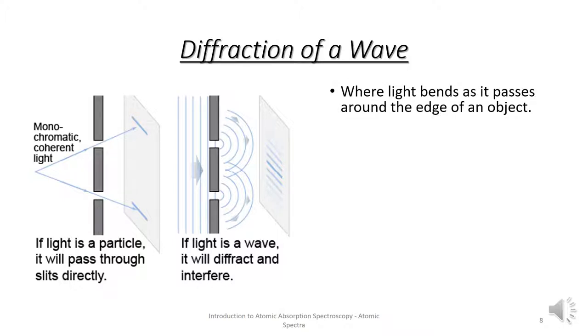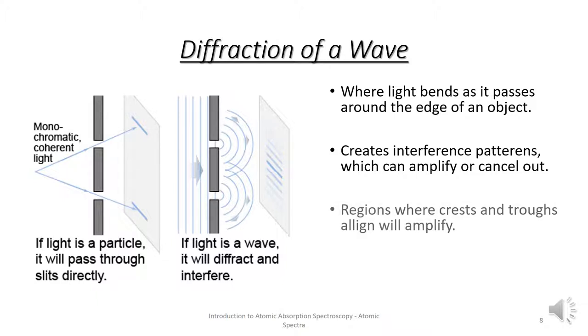Diffraction of a wave is where light bends as it passes around the edge of an object. It can create interference patterns, which can either amplify or cancel out. If the crests and troughs align, they will amplify. If they oppose, they will cancel out.